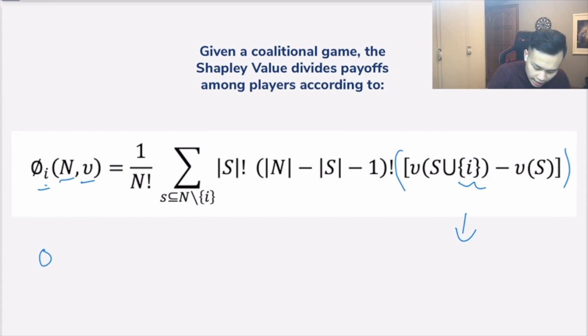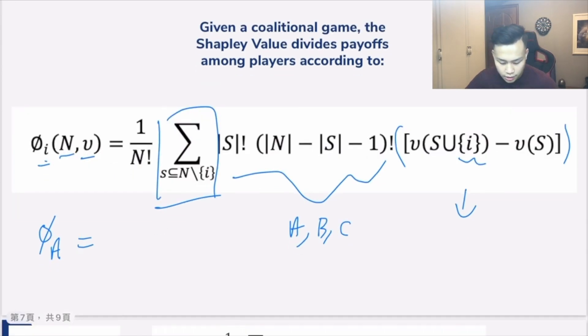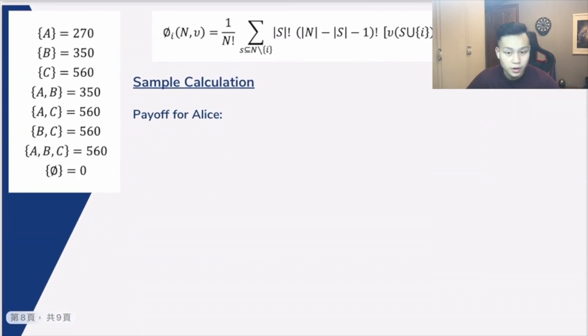We're basically looking at here, this part represents the marginal contribution of player i. We're looking at this marginal contribution taken over all possible permutations of how the society could have been made up. In this case, for example, if we're looking at the payoff for Alice, we'll first try to find out the marginal contribution for Alice in each of different cases taken over all possible permutations of how the society of Alice, Bob, and Catherine could have been made up. Then we'll sum all of these cases together.